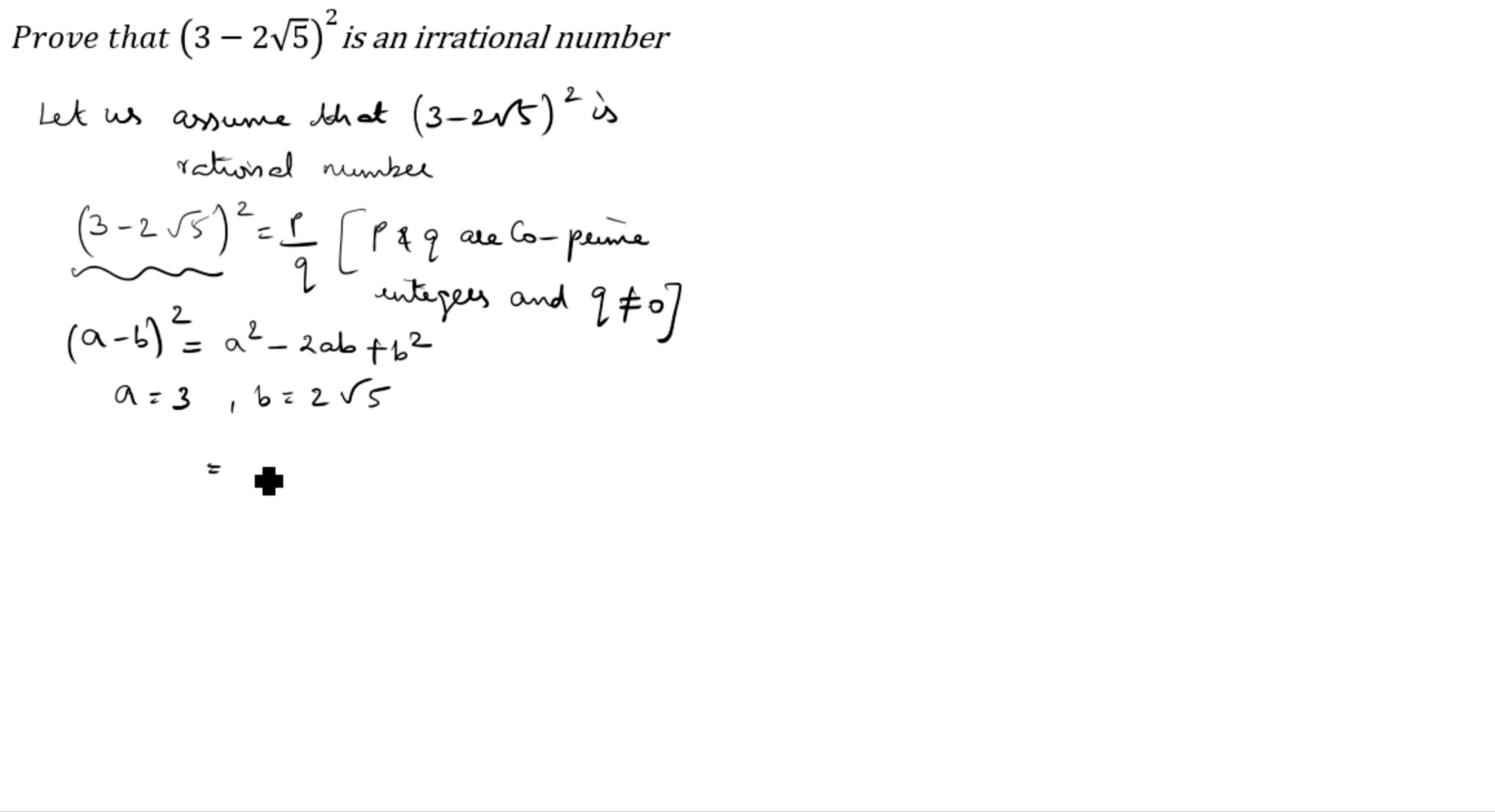We have to substitute: A square is 3 square minus 2AB is 2 into 3 into 2 root 5 plus B square is 2 root 5 the whole square. 3 times 3 is 9 minus 2 times 3 is 6, 6 times 2 is 12, so 12 root 5 plus 2 into 2 into root 5 into root 5 equal to 9 minus 12 root 5 plus 2 times 2 is 4, root 5 into root 5 is 5, so 4 into 5 equal to 9 minus 12 root 5 plus 20.